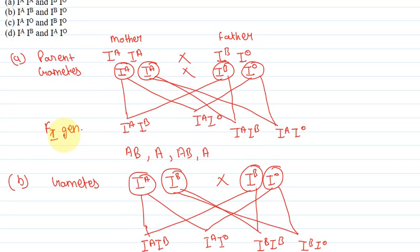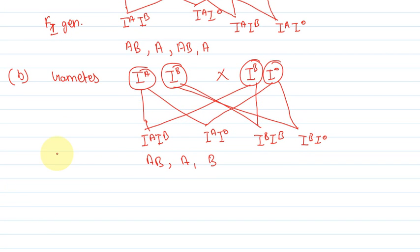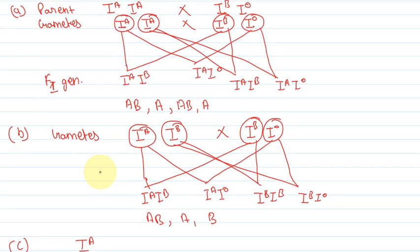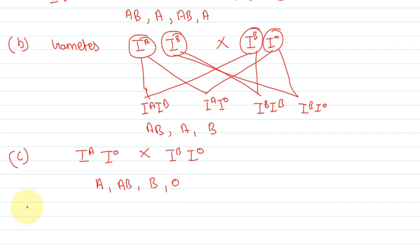Now let's move on to option C: IA, IO crossed with IBIO. If IA fertilizes with IB, we get AB blood group. If IO fertilizes with IB, we get B blood group. And if IO fertilizes with IO, we get O blood group. So the progeny of option C will be AB, A, B, and O blood groups. This option will be rejected too.